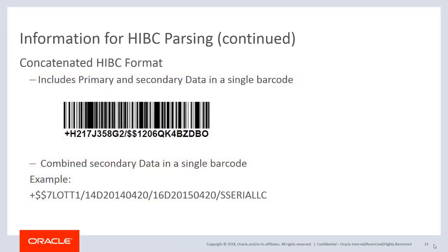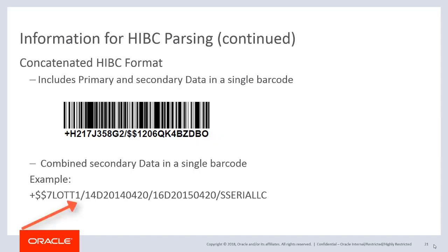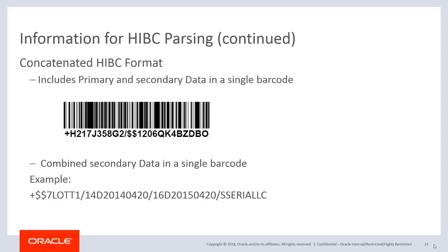Secondary data can be provided in its own separate barcode or included in one large concatenated barcode. In a concatenated barcode, the secondary data follows the primary data, and a forward slash is used as a delimiter between the primary and secondary data. There can be many forward slashes in a barcode to separate multiple secondary data fields. Sometimes a combined secondary data format is used by the labelers.